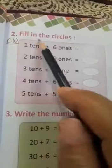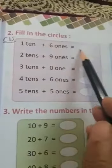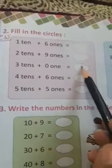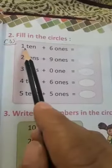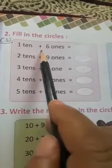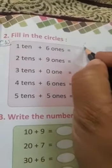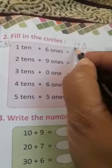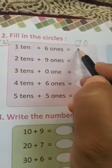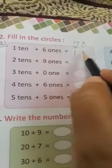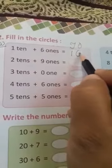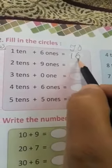Question 2: Fill in the Circles. Circles को भरो। बेटा, यह circles बने हुए हैं, इसको आपने fill करना है। First question क्या है? 1 Ten plus 6 Ones. सबसे पहले हम यहाँ Ones और यहाँ Tens लिखेंगे। 10 कितने हैं यहाँ पर? 1, Tens के नीचे 1. Plus 6 Ones, Ones कितने हैं? 6, Ones के नीचे 6. तो क्या बन गया यह? 16.